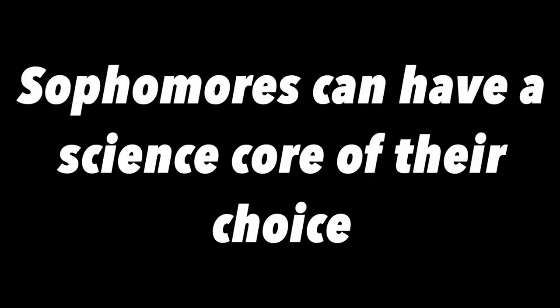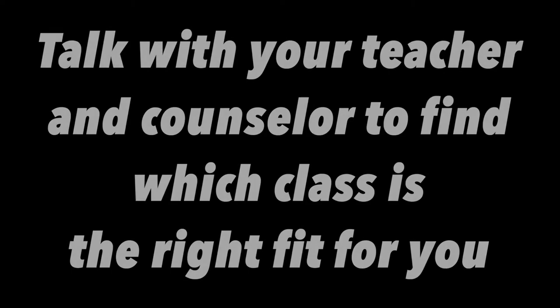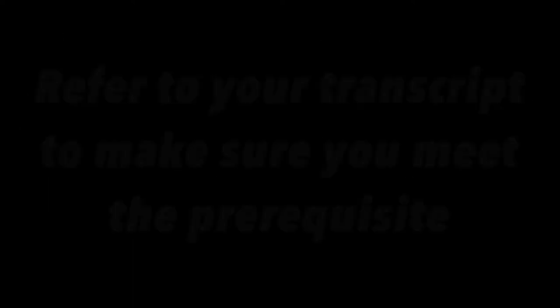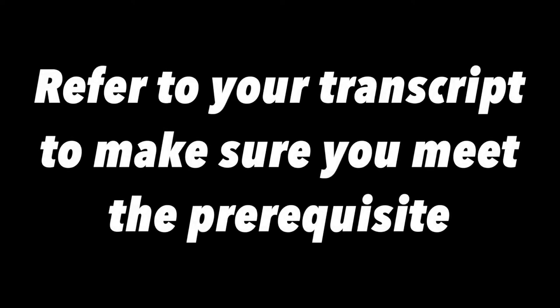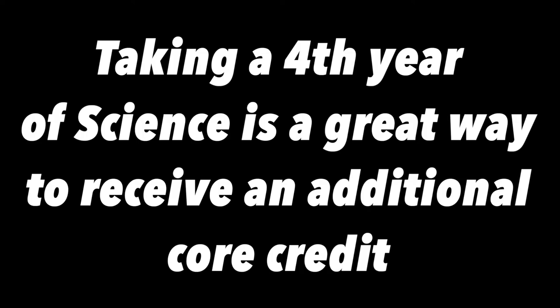Sophomores, your third year can be a science core of your choice. A great way to check a class to find out if it is a core credit or an elective credit is to review the course planning guide, which you can find on the high school website. You can talk to your science teacher and your counselor about which courses would be a right fit for you. Note, many of our science courses have some kind of prerequisite. You can use the information on your transcript to make sure you meet the prerequisite. Taking a fourth year of science could be another way to get your additional core credit. You can stop the video now so you have time to complete the science section.